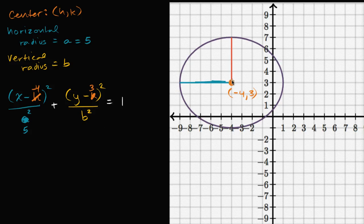And b is our radius in the vertical direction, we can see it's one, two, three, four units, so b is equal to four, so that is four.